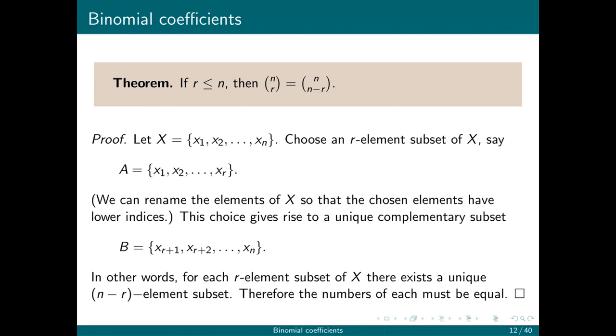So here's the theorem for that. n choose r is always equal to n choose (n minus r). And here's a proof. It is basically exactly the example that I just laid out, just kind of made general.